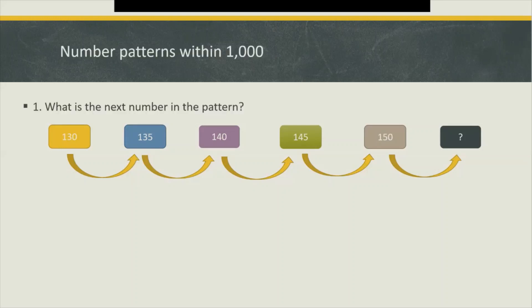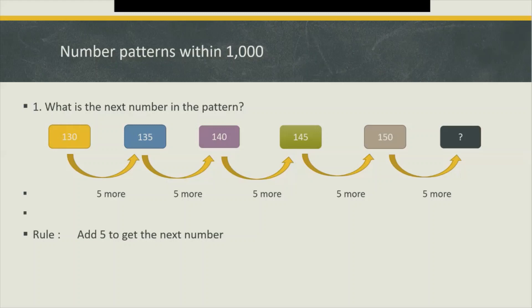What is the next number in the pattern? We have 130, 135 — what do you see? Five more, isn't it? That's correct. So we add five to get the next number. So what is the missing number? That means 150 plus 5 equals 155, so the next number in the pattern is 155.